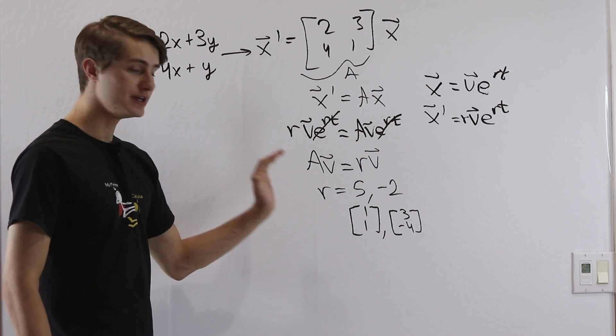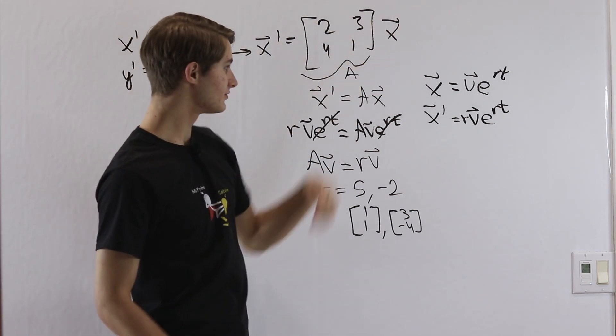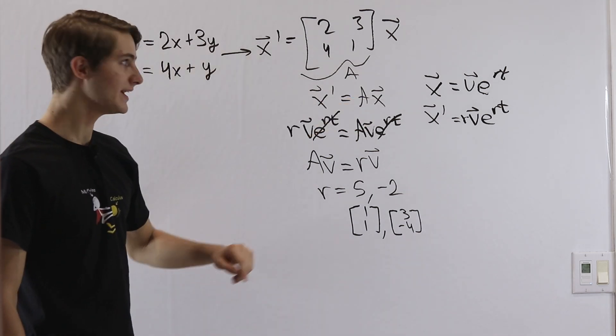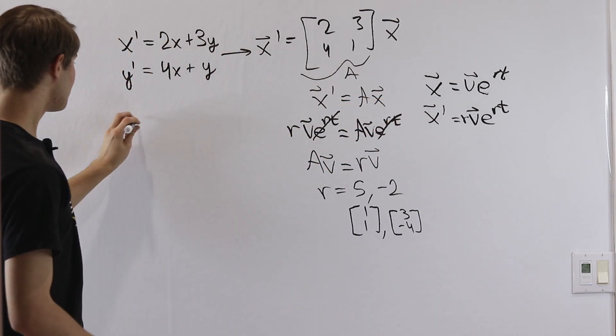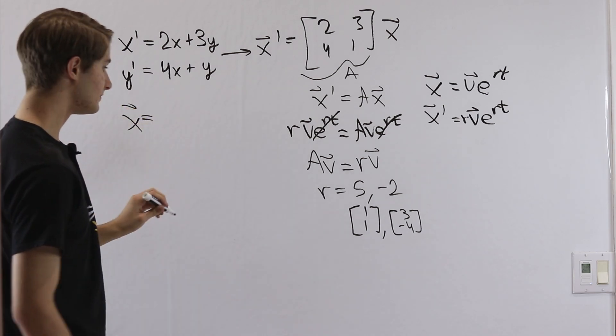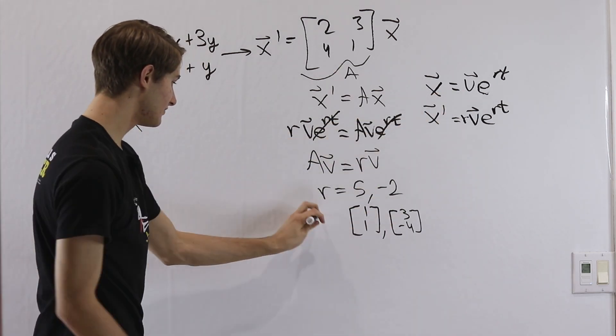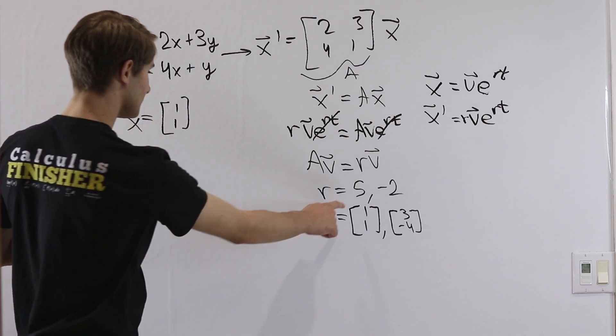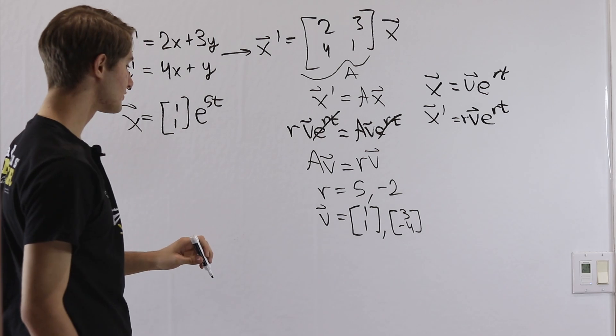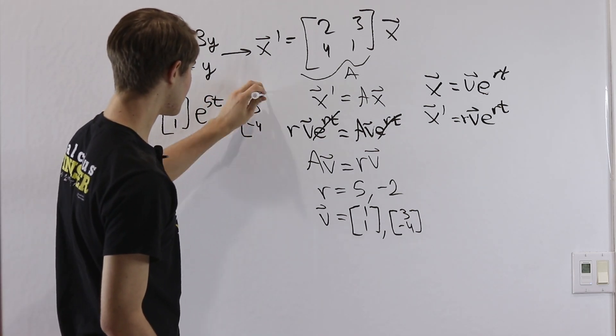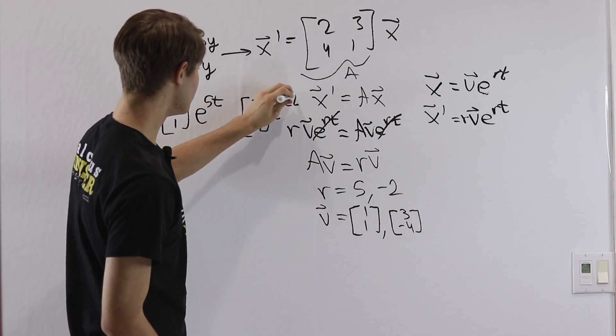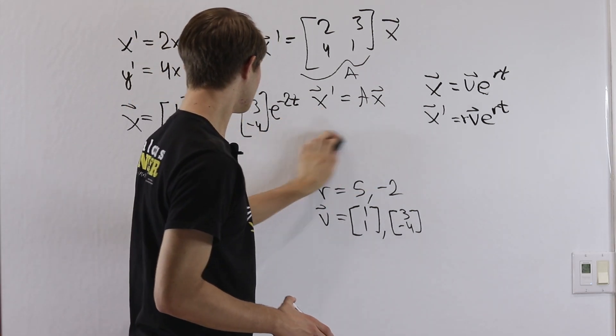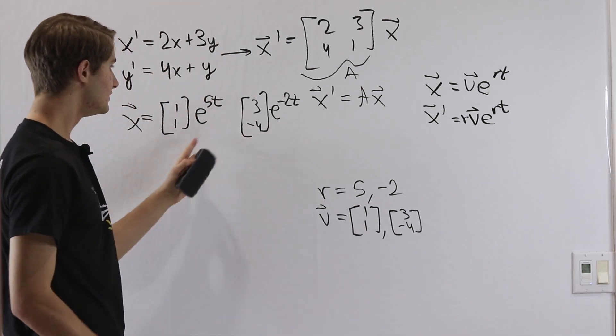So if we go back to our matrix equation here, x prime equals A x, the answer x that we're going to have is we're going to have the vector v, which is what we have here. These are the vectors v. So we have 1, 1 times e to the 5t. And then the other solution we have is 3, negative 4e to the negative 2t. So when we look at what we have here, notice that we have two different solutions.